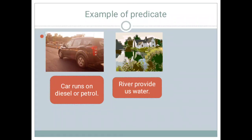Setting those thoughts aside, the sentence tells us: the car runs on diesel. It is telling us how the car runs. So in this sentence, the car will be our subject, and runs on diesel or petrol will be our predicate.